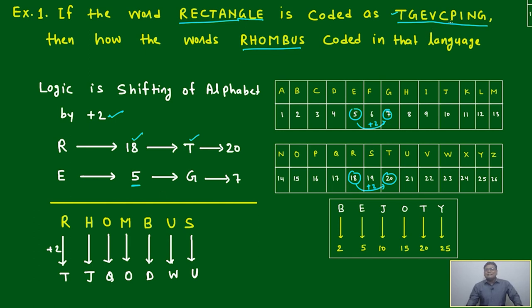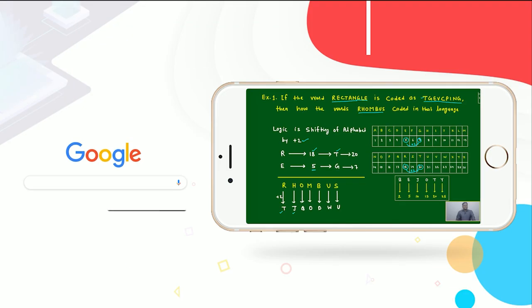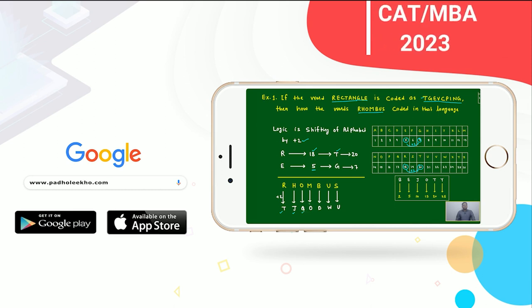In a similar way, we will apply this to RHOMBUS. R shift by 2 becomes T, H shift by 2 becomes J, O shift by 2 becomes Q, and in a similar way you will get the code for RHOMBUS: T J Q O D W.